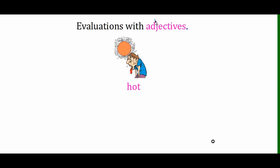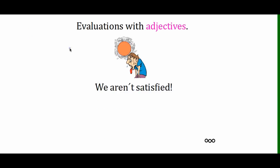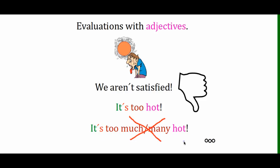Now we're going to look at some adjectives. The structure of evaluations with adjectives is a little bit different. The first adjective we are looking at is 'hot'. In the picture someone doesn't look very happy — he's sweating and looks very tired. Are we satisfied? Do we want it to be hotter? Of course not. So the evaluation is: 'It's too hot.' The structure is: subject 'it', verb 'be', then 'too' plus the adjective. With adjectives we don't say 'too much hot' or 'too many hot' — all we need is 'it's too hot'.